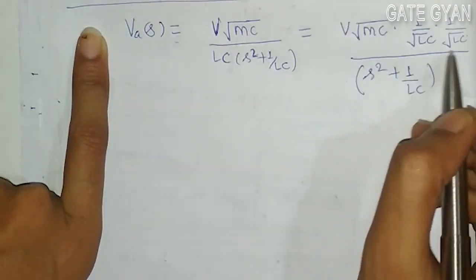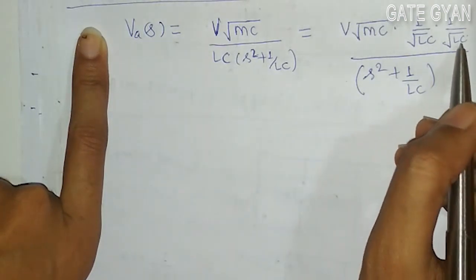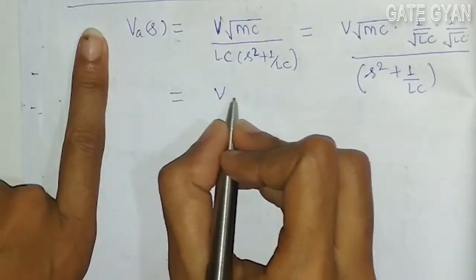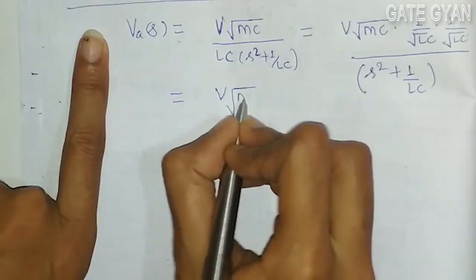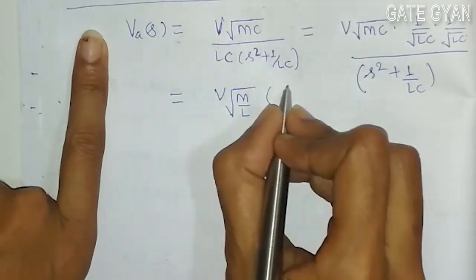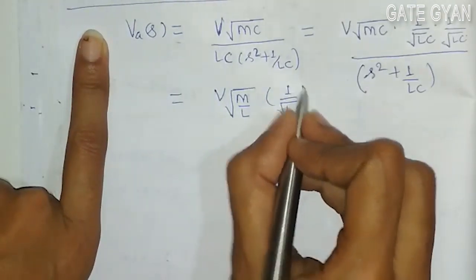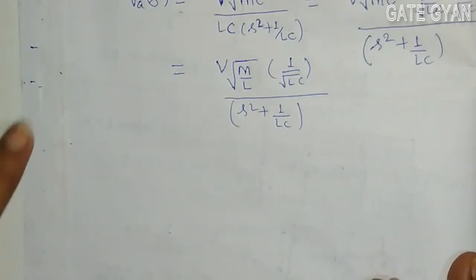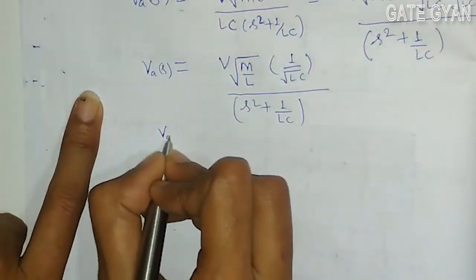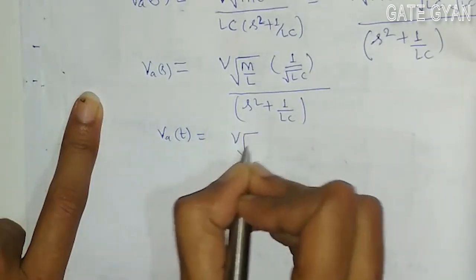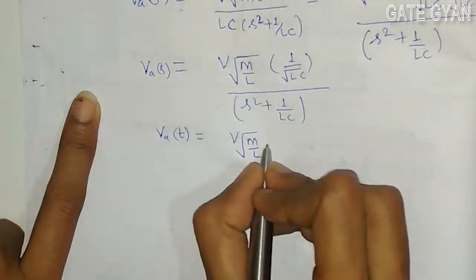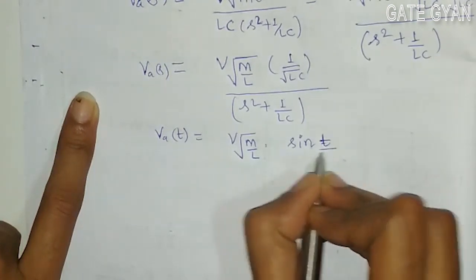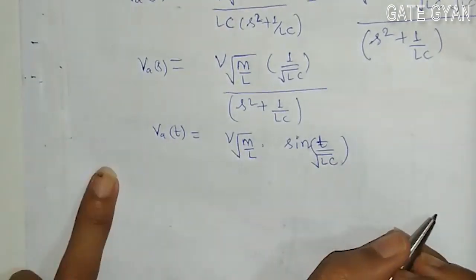Now when I take the inverse Laplace of this term, my VA(t) will look like: VA(t) = V·√(M/L) · sin(t/√(LC)). This is my expression for VA(t) obtained after taking the inverse Laplace transform.